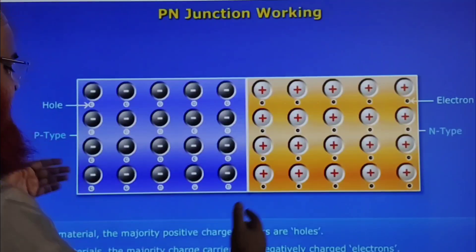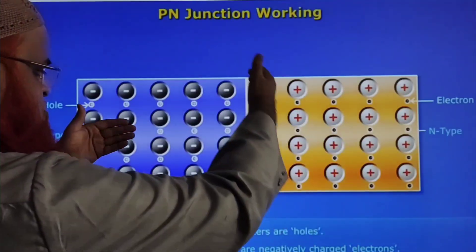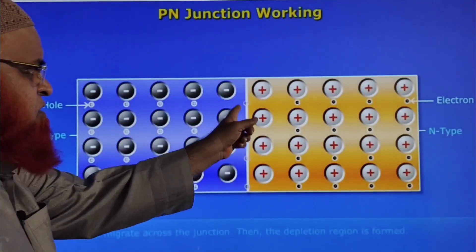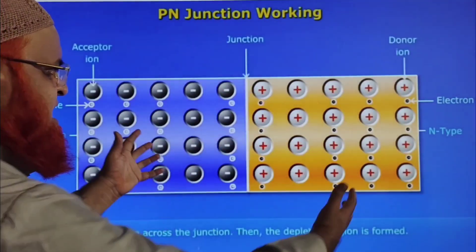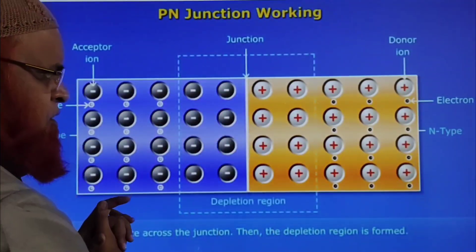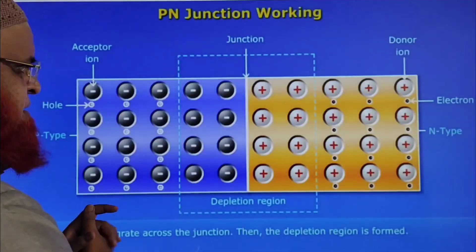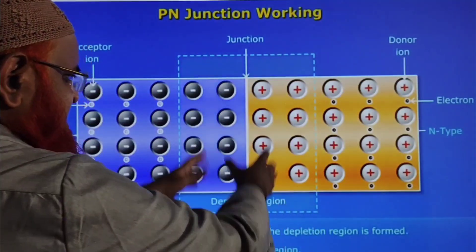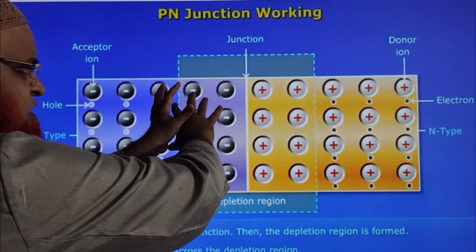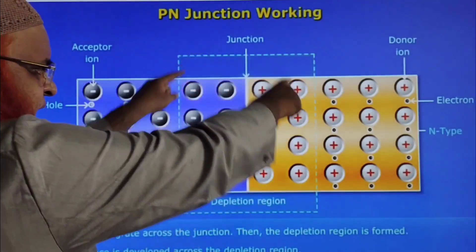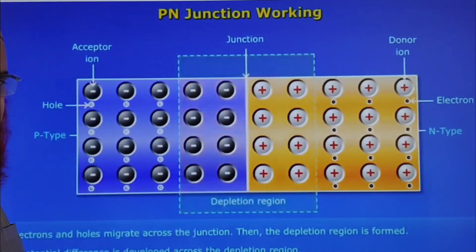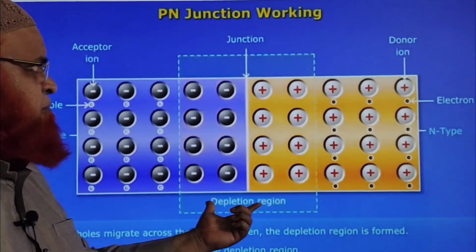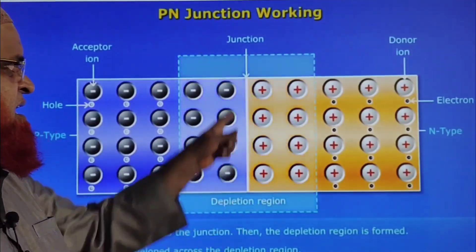So let us see what is going to happen. As soon as you join here, electrons will fall into the holes — only at the edges, the electrons will fall into the holes. And here, positive ions and negative ions are formed. This is called the depletion region.